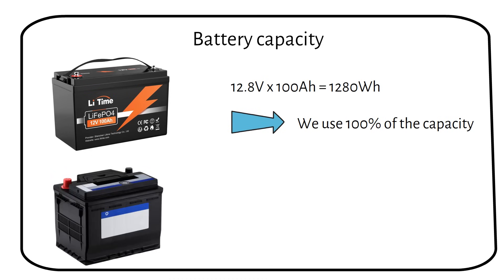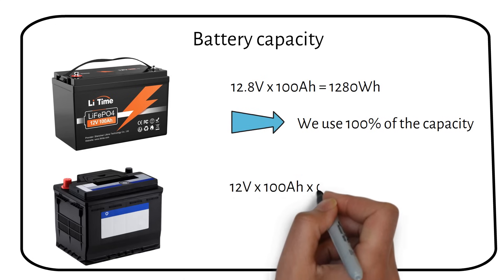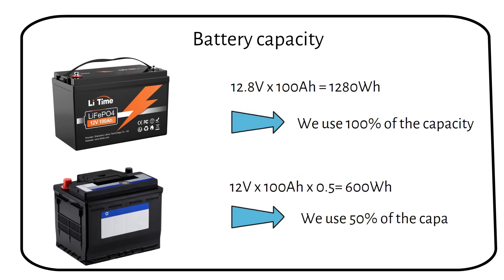By the way, if you have a 12 volt 100 amp hour lead acid battery, then this becomes a formula. You will have 600 watt hours of usable capacity.